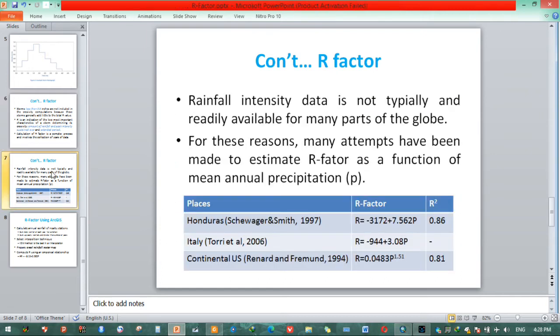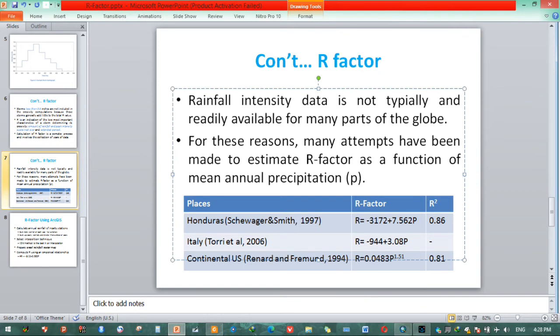Rainfall intensity data is not typically and rarely available for many parts of the globe. For these reasons, many attempts have been made to estimate R factor as a function of mean annual precipitation.